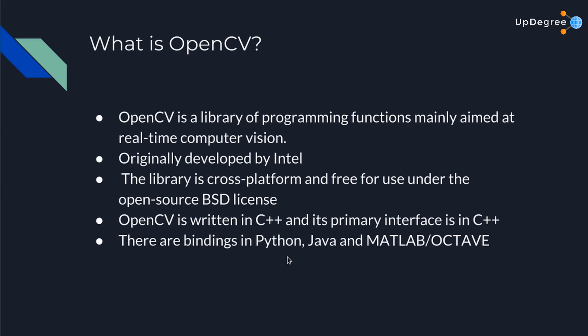The first alpha version of OpenCV was released to the public at the IEEE Conference on Computer Vision and Pattern Recognition in 2000, and five betas were released between 2001 and 2005. The second major release was in October 2009. OpenCV 2 includes major changes to the C++ interface. OpenCV is written in C++ and its primary interface is in C++, because C++ is a very fast language with very low runtime, meaning code written in C++ runs very fast — especially useful for real-time computer vision applications that need blazingly fast processing.